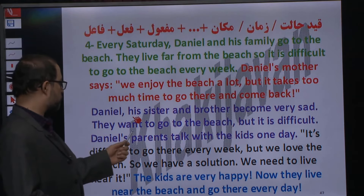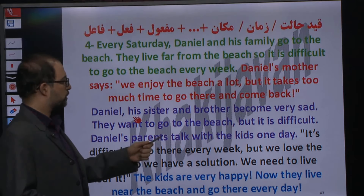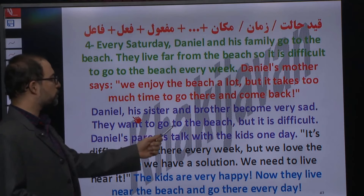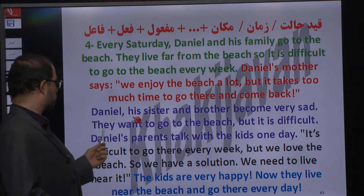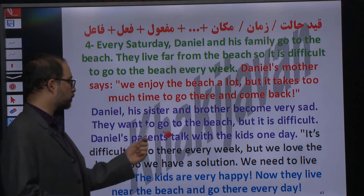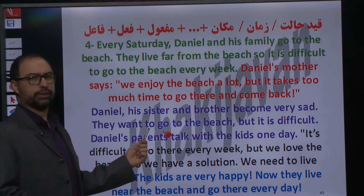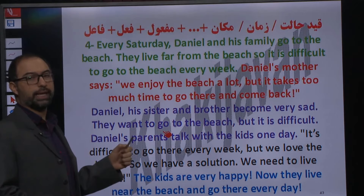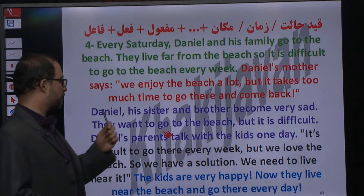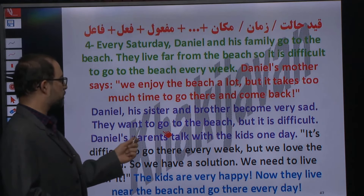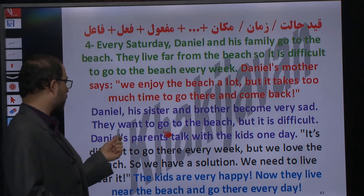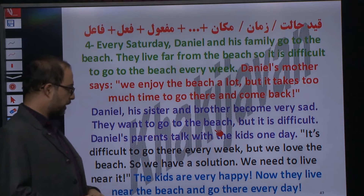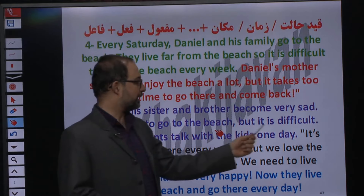They want to go to the beach but it is difficult. اونها میخوان برن به ساحل. این جمله دو تا فعل داره پشت هم. گفتیم جمله‌هایی که دو تا فعل دارن باید با to به هم وصل بشن. They want to go to the beach, but it is difficult.